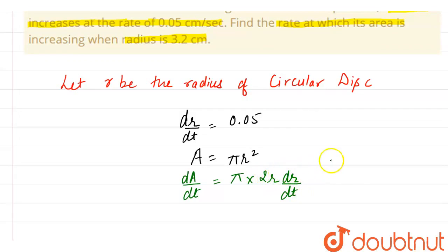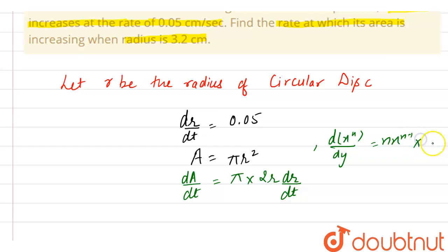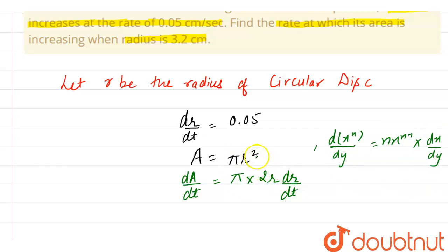By using the chain rule. Now let me tell you how I am writing that the differentiation of pi r squared with respect to t is pi into 2r into dr/dt. When we differentiate d of x raised to power n with respect to y, it is n into x raised to power n minus 1 into dx/dy. Because here we are differentiating an x function with respect to y, so we have to multiply it with dx/dy. Here we are differentiating r with respect to t, so that's why we write dr/dt. If we are differentiating x raised to power n with respect to x, then there is no need to write dx/dy.